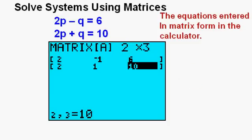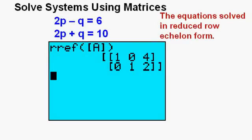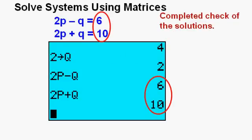Here is the equation entered in matrix form on the calculator. Note how the numbers are the same as those in the system of equations we're evaluating. And here it is in reduced row echelon form. The solution is p equals 4 and q equals 2. And here's the completed check of the solution. We get 6 and 10 just like the original equations. This check is really not a check of whether the calculator figured it out correctly, but a check that we entered the matrix values correctly in the first place to result in a correct solution.